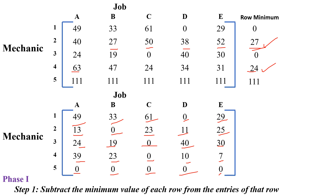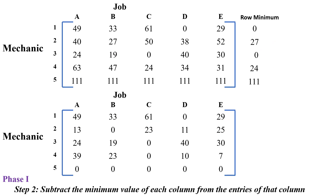Next we go for column reduction: subtract the minimum value of each column from the entries of that column. The minimum values for the first, second, third, fourth, and fifth columns are all 0. Subtracting 0 from each column entry results in no changes to the values.